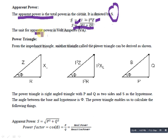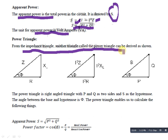The next step is the phasor diagram and power triangle. From the impedance triangle, another triangle called the power triangle can be derived. The impedance triangle is based on Z equals R plus j XL, where XL is on the imaginary axis, resistance R is on the x-axis, and the resultant is Z. The phase angle is phi.